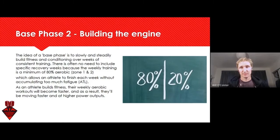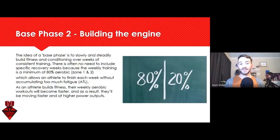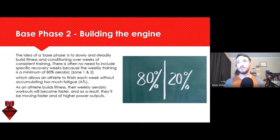The 80/20 rule - 80% aerobic base phase training and 20% hard training - raises the question: is this 80/20 per session, per week, per month, by time, heart rate, or distance? 20% going hard is actually a lot - if you're spending 10 hours a week training, that's two hours of going hard. I generally think of this as sessions: if we have 10 sessions, maybe two of them will be hard. In our analyzing training module, 10 hours of training means about eight hours of aerobic base and two hours of a specific workout.